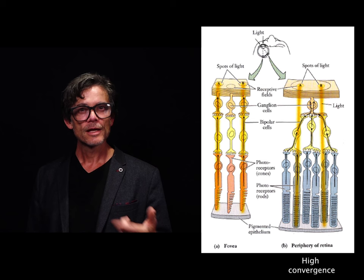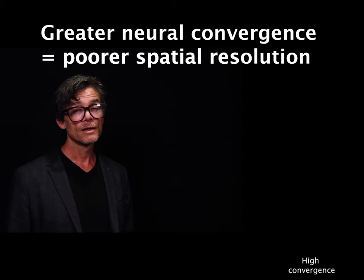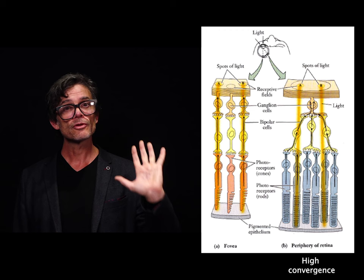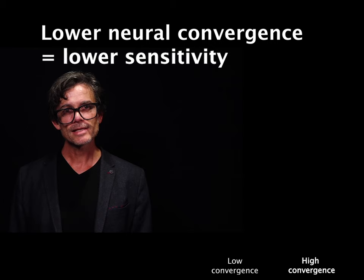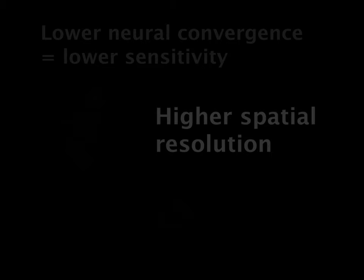This increase in sensitivity comes at a cost, however. When the amount of convergence is high, the ganglion cell can't distinguish which of its many photoreceptor inputs have been stimulated. Consequently, information and resolution is lost. On the other hand, when the amount of convergence is lower, the ganglion cell will be less sensitive, but resolution is greater.